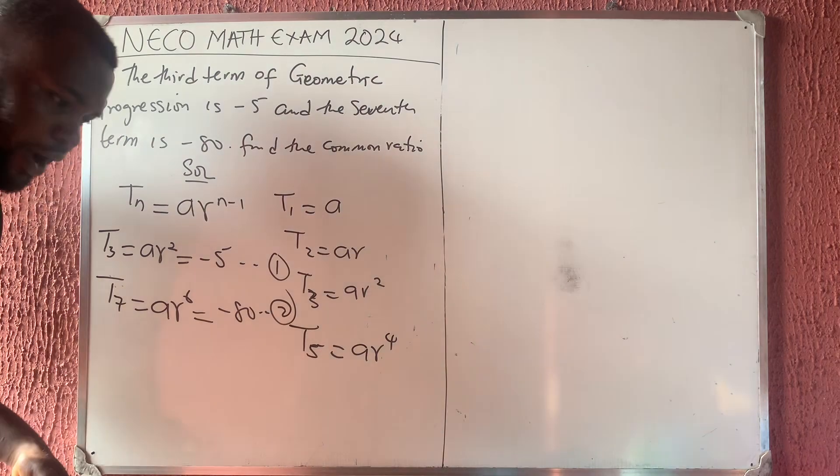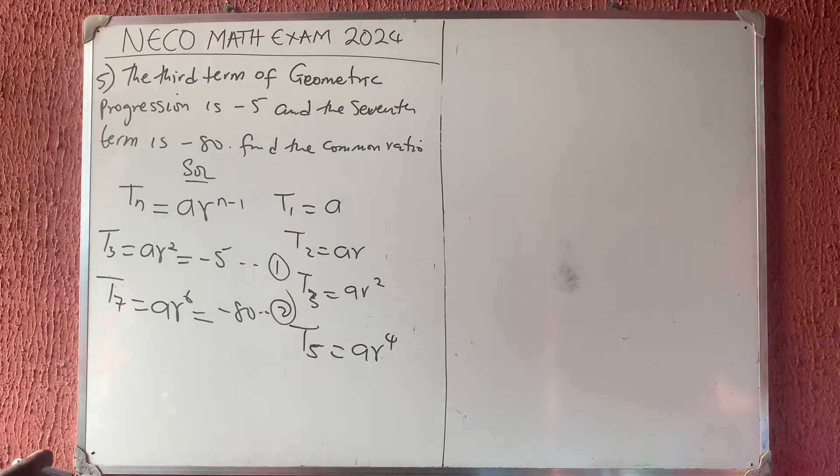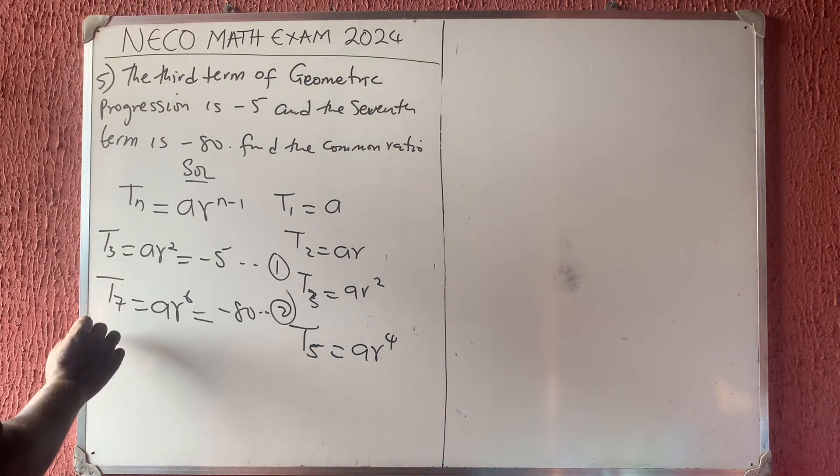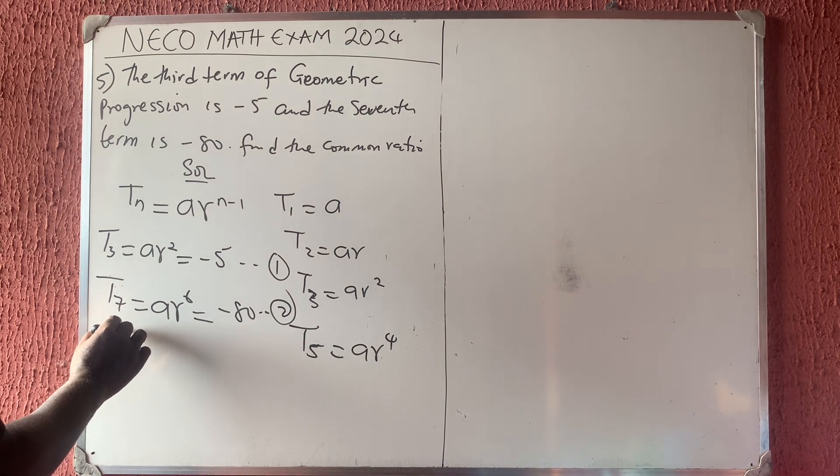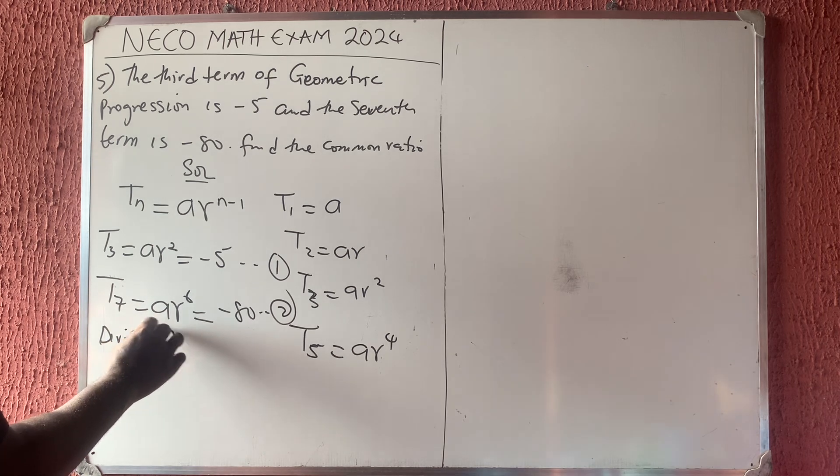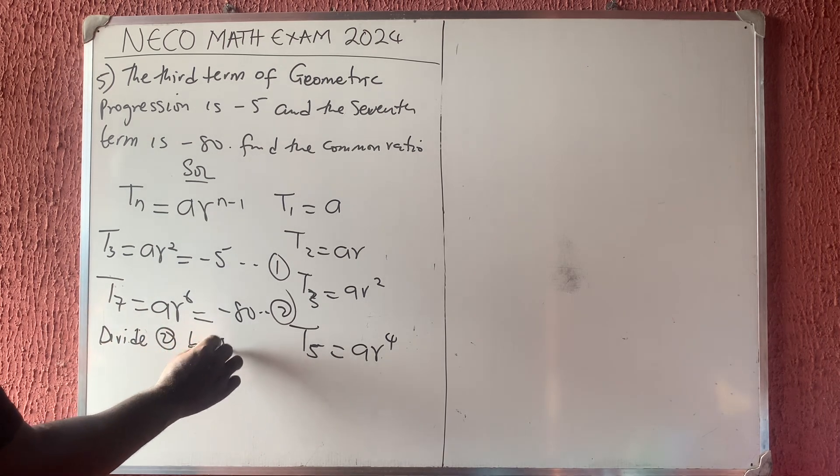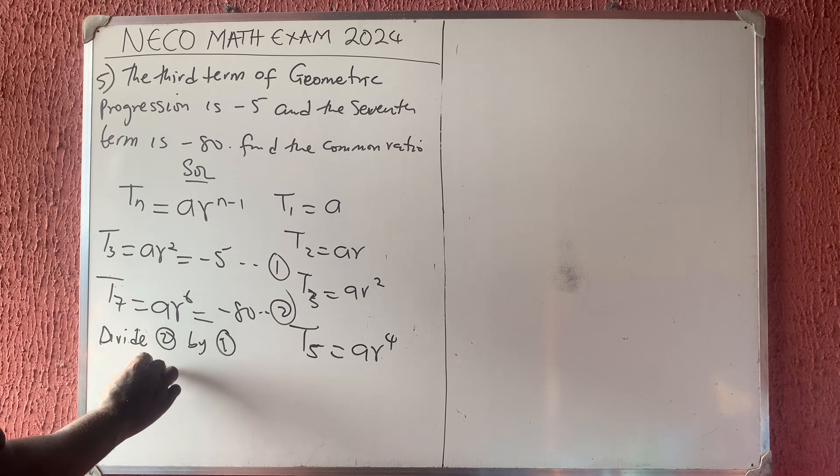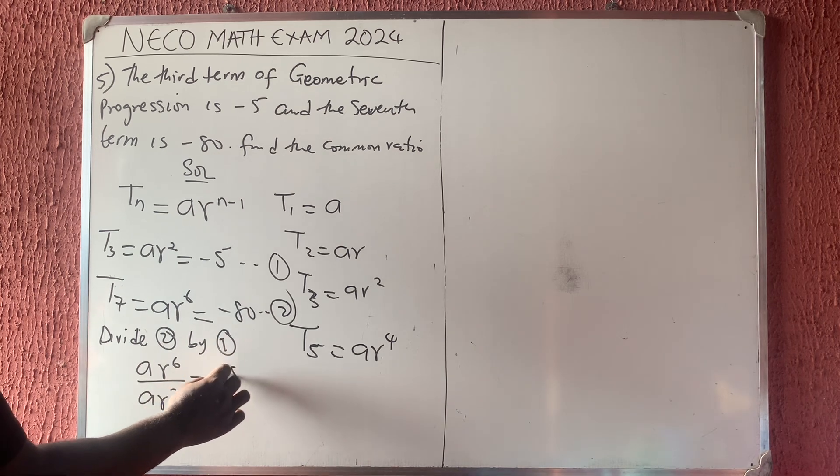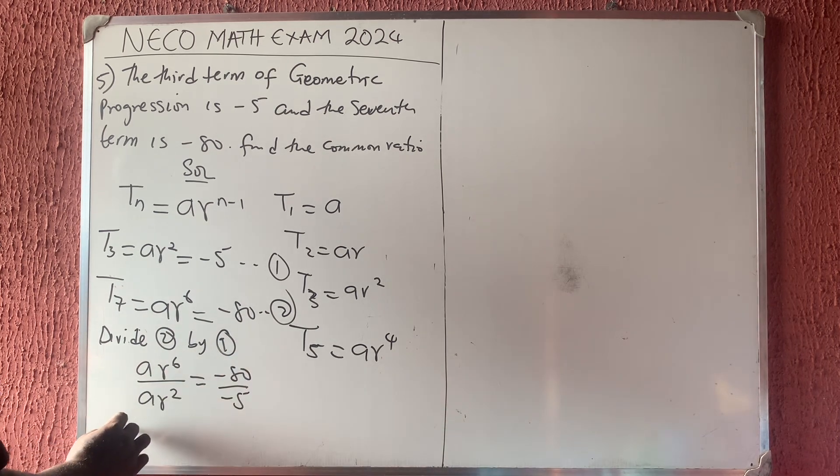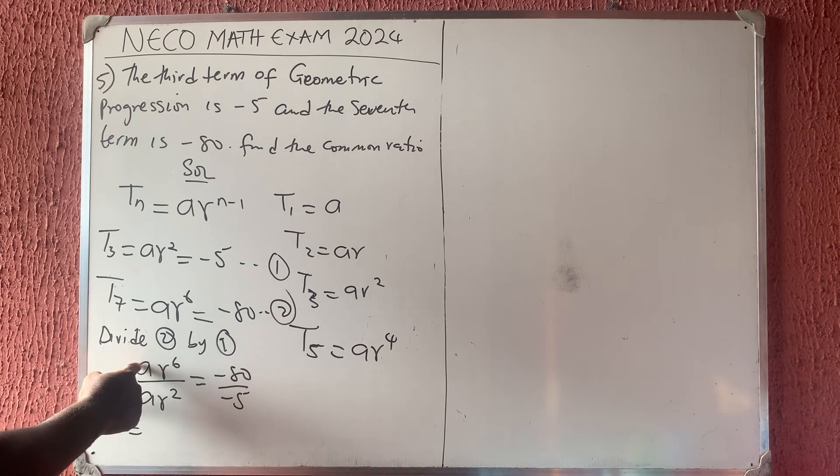Now, let's divide equation 2 by equation 1. Divide equation 2 by equation 1, which means A R raised to the power of 6 divided by A R raised to the power of 2 is equal to minus 80 divided by minus 5.